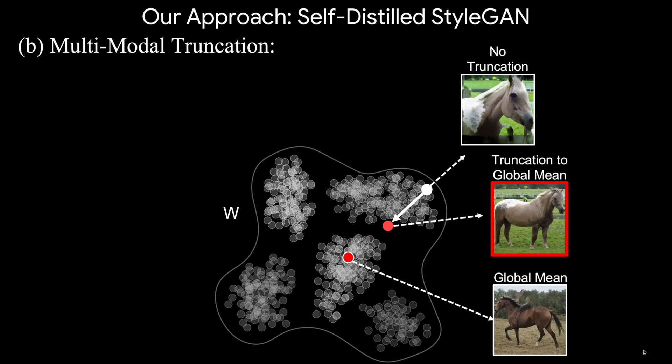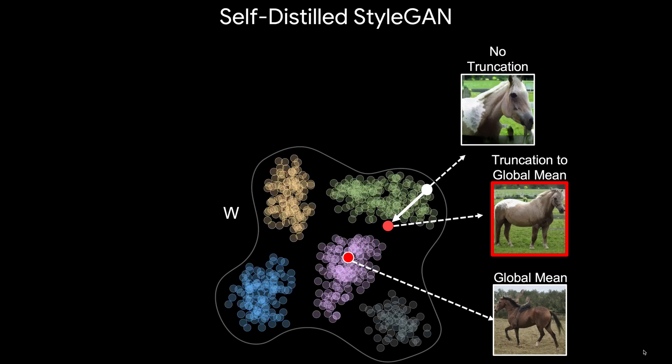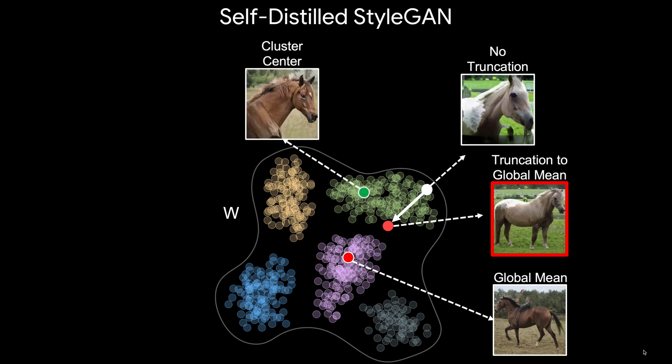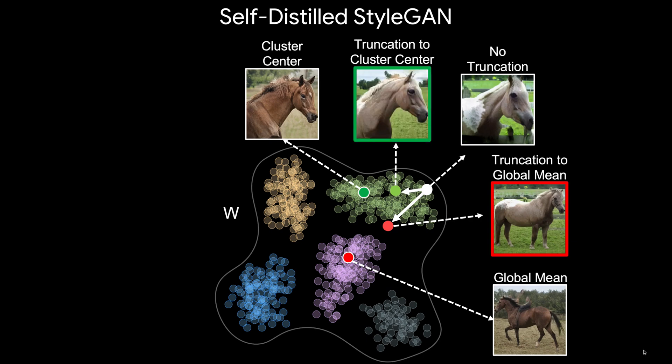To overcome this, we introduce the multimodal truncation trick, where we first cluster the latent space, then find the perceptually nearest cluster center, and finally push the sampled latent code towards that center. This operation better maintains the characteristics of the non-truncated image, allowing us to generate high quality images while maintaining diversity and capturing the multimodal nature of the data.